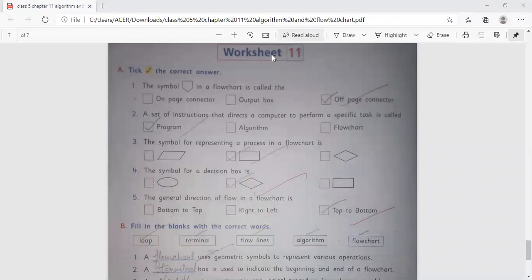Now comes to worksheet 11. Tick the correct answer. The symbol in a flowchart is called an off-page connector. The set of instructions that directs a computer to perform a specific task is called program. The symbol for representing a process in a flowchart is rectangle. The symbol of a decision box is diamond. The general direction of flow in a flowchart is top to bottom.